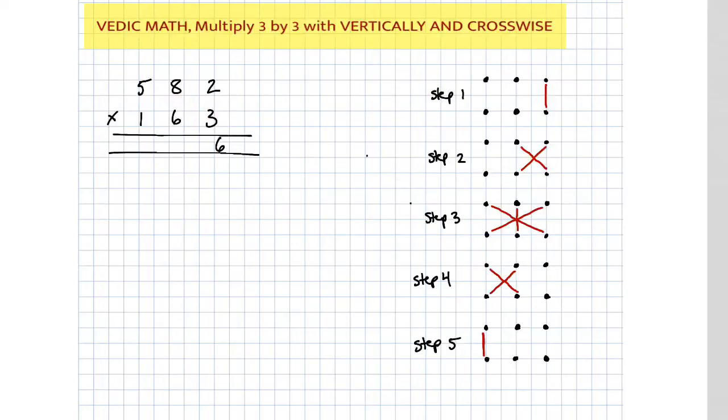Step number 2, 8 times 3 plus 6 times 2. So I'm gonna write this out for you guys so you could follow along. Usually you could do this in your mind, in your head, if you want. Okay, 8 times 3, we know that's 24. 6 times 2 is 12. So 24 and 12 make 36.